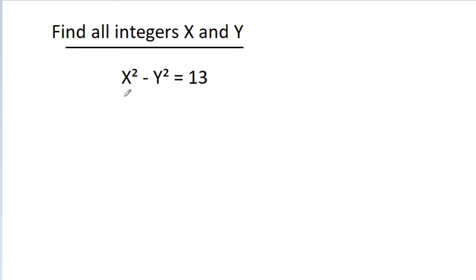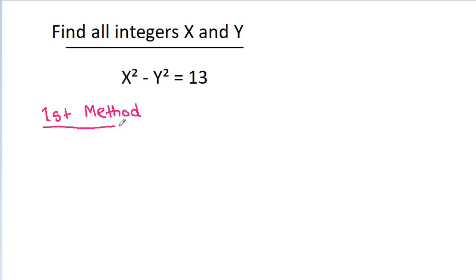In this video, we have given that x squared minus y squared is equal to 13. Then we have to find all integers x and y. The first method: we have x squared minus y squared is equal to 13.